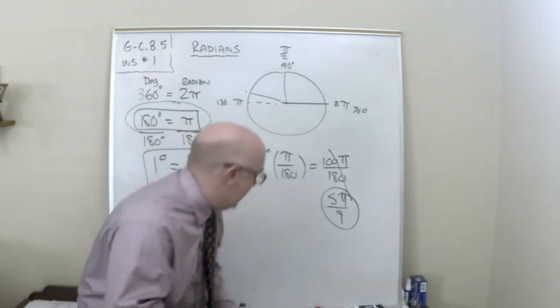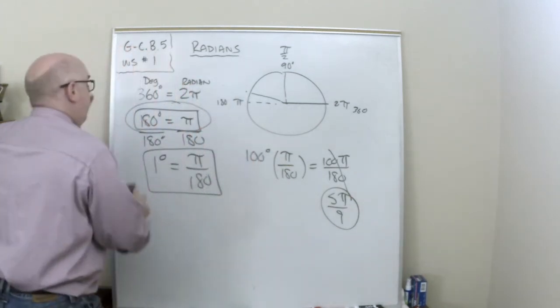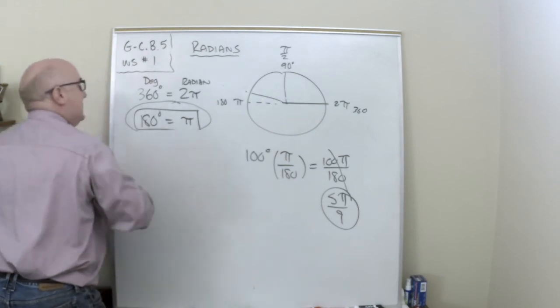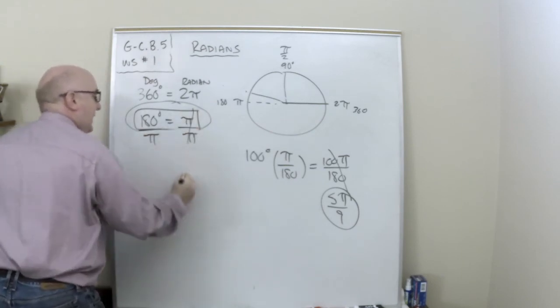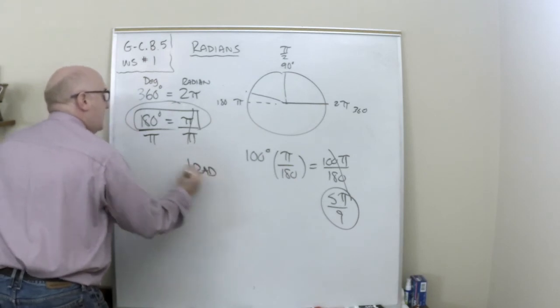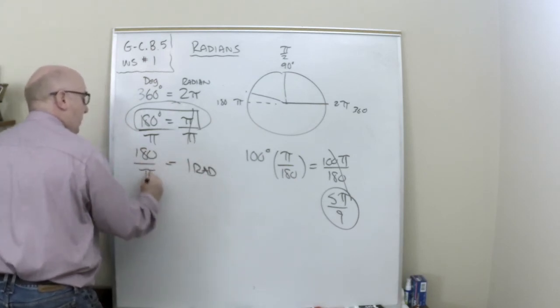I don't know. Maybe you're not getting that. Let's try it another way. If, instead of dividing by 180, I could have divided both sides by pi. And what I get is 1 radian is equal to 180 divided by pi.